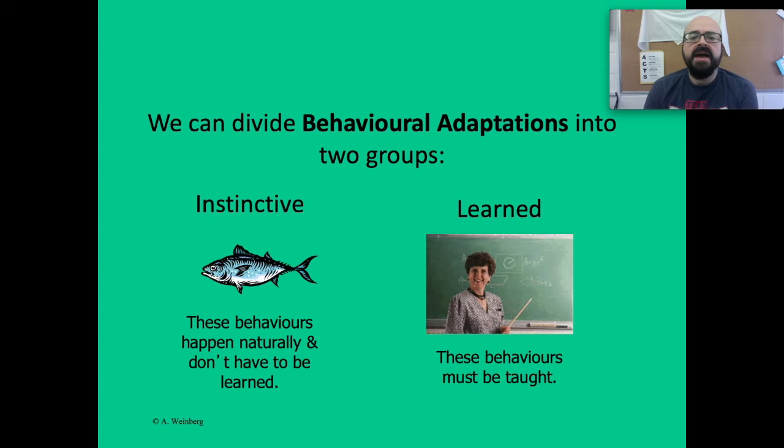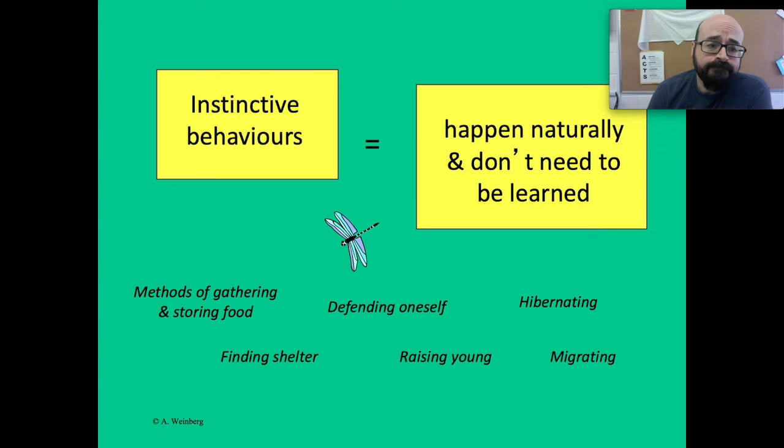We can divide behavioral adaptations into two groups: instinctive and learned. Instinctive behaviors happen naturally and don't have to be taught. Learned behaviors must be taught.